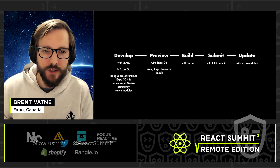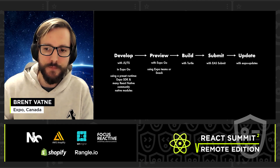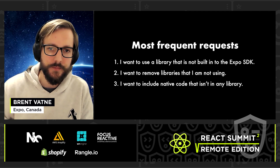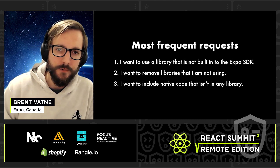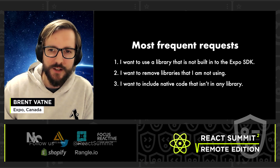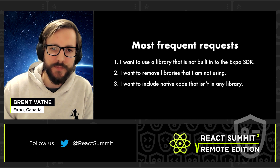Now that we've seen the golden path, we can take a look at where these abstractions start to fall short. We get a lot of feature requests from developers building Expo managed apps, but we can distill most of them down to one of three things.